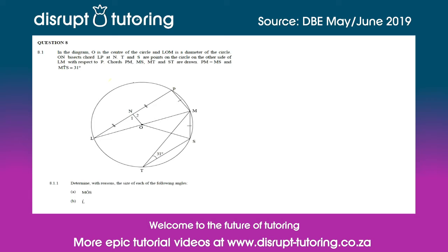Question 8.1 has given us a diagram where O is the center of the circle and LOM is a diameter, so we're clearly going to have to do some circle geometry. They've given us some other information on the diagram, and importantly angle MTS is 31 degrees. They want us to determine angle MOS, and we're going to use the theorem that the angle at the center equals twice the angle at the circumference, because angle MTS of 31 degrees is at the circumference.